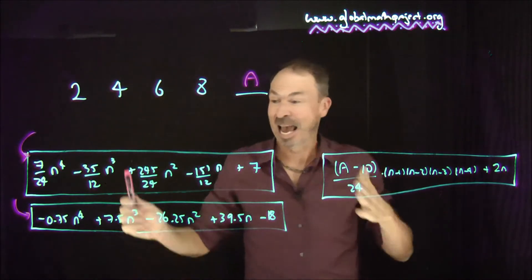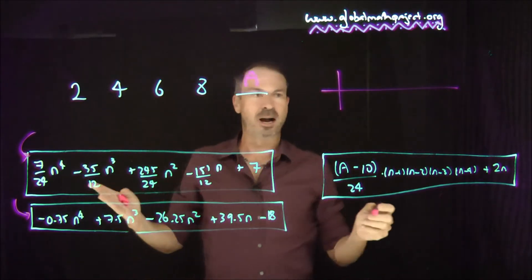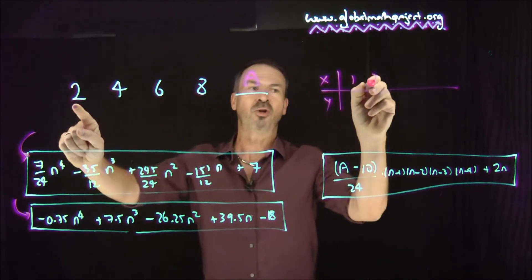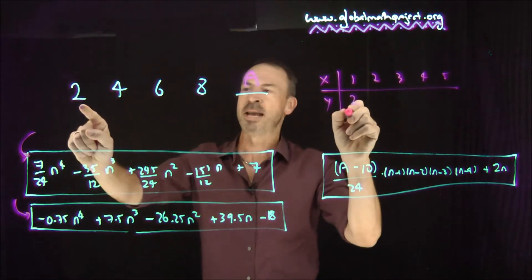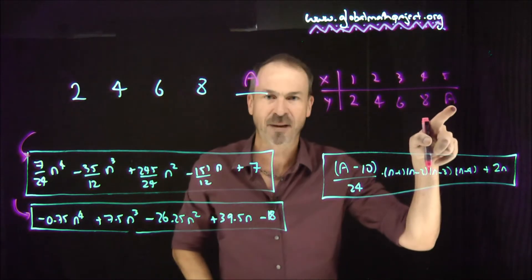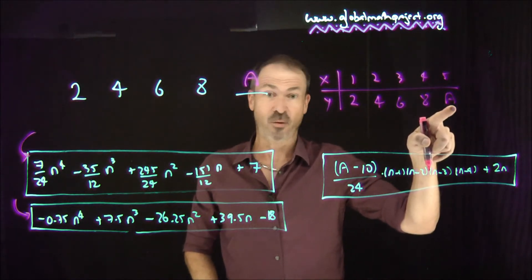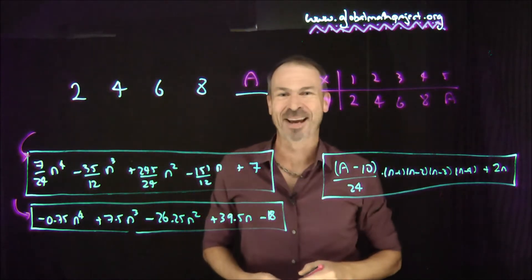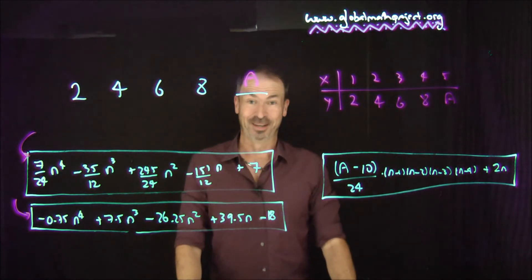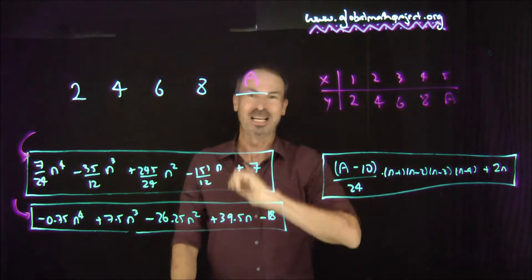Let me show you how I did that — how to create these crazy formulas. What I'm really doing is collecting data. I'll use the variables x and y. In this particular example, x is 1, 2, 3, 4, or 5, and I want the output to be 2, 4, 6, 8, and then whatever number you like — 17, negative 8, square root of pi, whatever you like. Any number would work. So let me show you how to take a set of data and find a formula that's going to work.